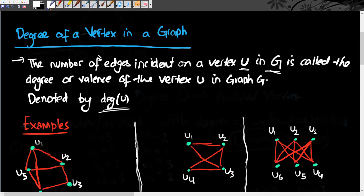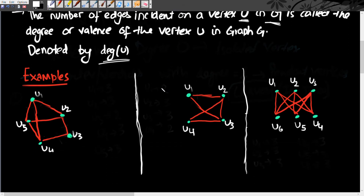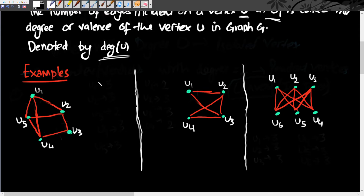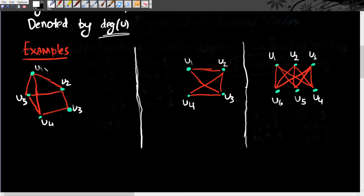Starting with degree: the number of edges incident on a vertex u in graph g is called the degree or valence of vertex u in graph g, and it is denoted by degree of u. Let's illustrate what degree exactly is with three examples.